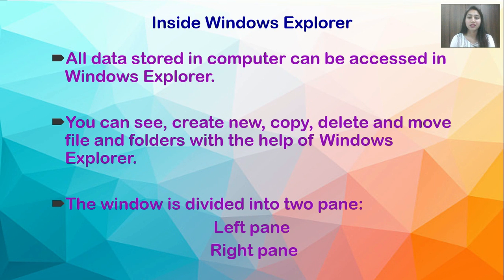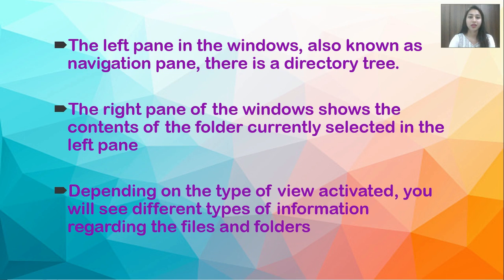Next is inside Windows Explorer. All data stored in the computer can be accessed in Windows Explorer. You can see, create new, copy, delete, and move files and folders with the help of Windows Explorer. Windows Explorer is divided into two panes — the left pane and the right pane. The left pane is also known as the navigation pane and contains a directory. The right pane shows the content of the folder currently selected in the left pane. Depending on the type of view you activate, you will see different types of information regarding the files and folders.